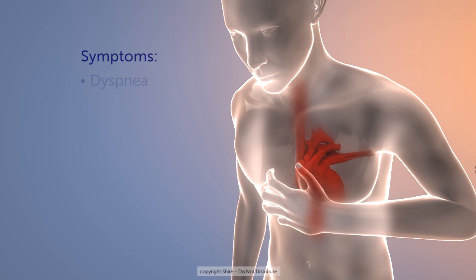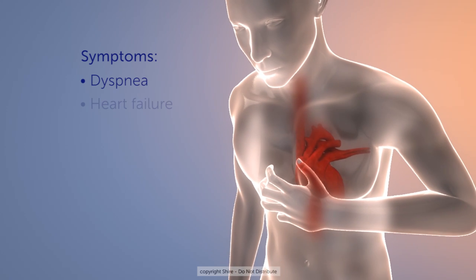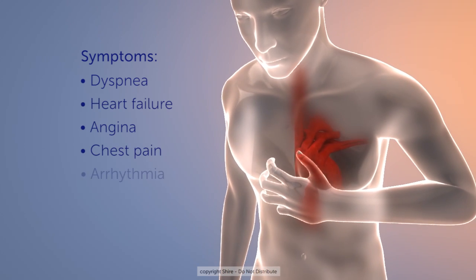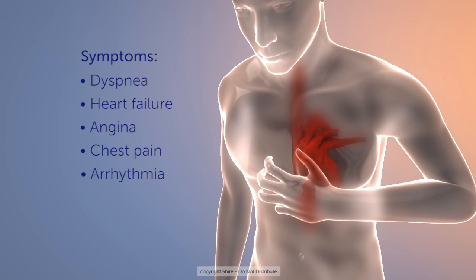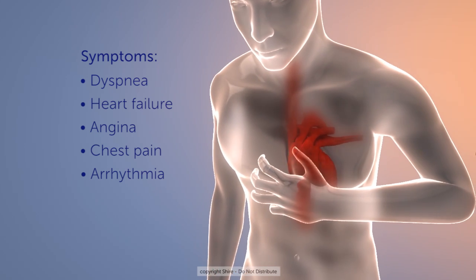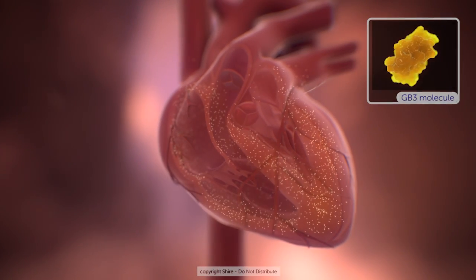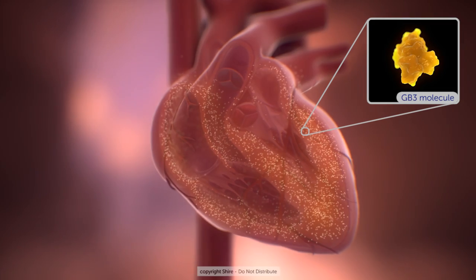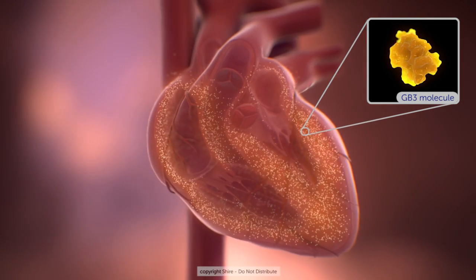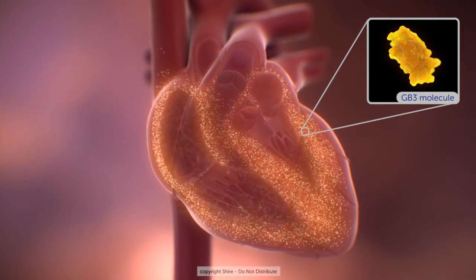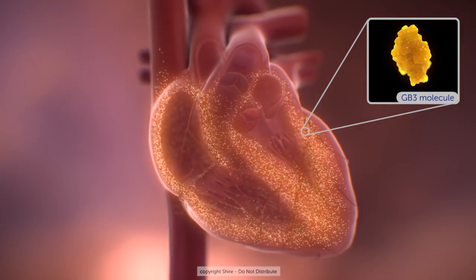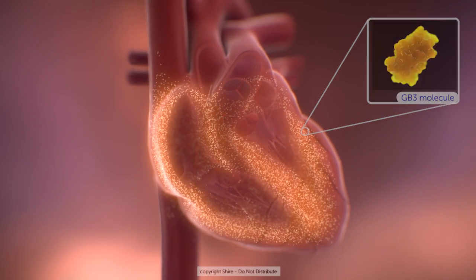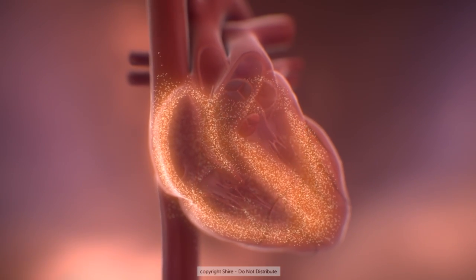Symptoms include dyspnea, heart failure, angina, chest pain, and arrhythmia. These symptoms can be attributed to the accumulation of GB3, which triggers intracellular signaling pathways that lead to cardiac hypertrophy and fibrosis.